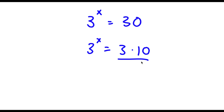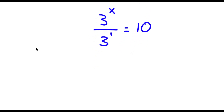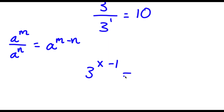Now I'm going to go ahead and divide both sides by 3, so these two cancel out. Now I am left with 3 to the power of x over 3 to the power of 1 — because anything to the power of 1 is the same thing as itself — is equal to 10. Now if I have something in the form a to the power of m over a to the power of n, this is going to equal a to the power of m minus n. So in this case, 3 to the power of x over 3 to the power of 1 equals 3 to the power of x minus 1, which is equal to 10.